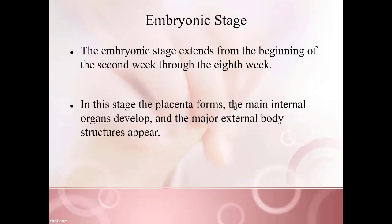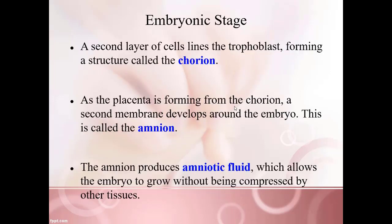Now we'll talk about the embryonic stage. This stage extends from the beginning of the second week through the end of the eighth week — basically from the start of week two to the end of month two. In this stage, the placenta is being formed, the main internal organs are being developed, and major external body features will start to appear.